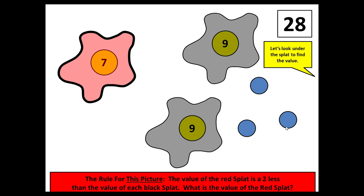In this case, the value is seven. And if you return to the rule, you can see that the value of the red splat is two less than the value of each black splat. Let's move on to level three.